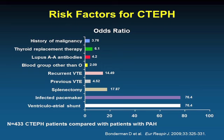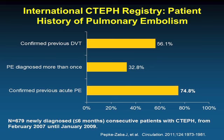Traditionally, 25 to 50% of patients with CTEPH did not present with a history of PE. A large European registry showed that about 75% of patients will report a previous PE, but about a quarter will not. This should not be surprising since PE is also under-recognized and sometimes difficult to diagnose. The absence of a history of DVT or PE does not make CTEPH unlikely in someone with pulmonary hypertension.